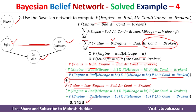In this video, I have discussed how to calculate conditional probabilities for each of the nodes in the Bayesian belief network and how to use these conditional probabilities to get the probability for the given condition. This is solved example number 4; links for other examples are in the description below. I hope the concept is clear. If you like the video, do like and share with your friends, press the subscribe button for more videos, and press the bell icon for regular updates. Thank you for watching.